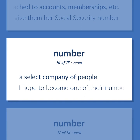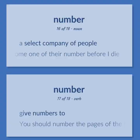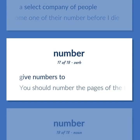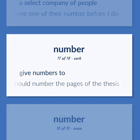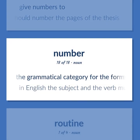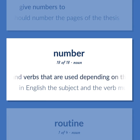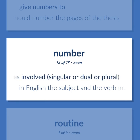A select company of people. I hope to become one of their number before I die. Give numbers to — you should number the pages of the thesis. The grammatical category for the forms of nouns and pronouns and verbs used depending on the number of entities involved: singular or dual or plural. In English the subject and the verb must agree in number.